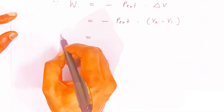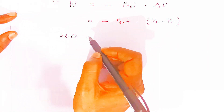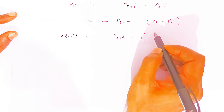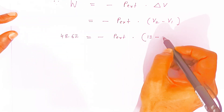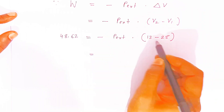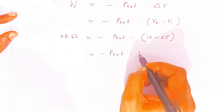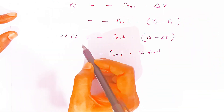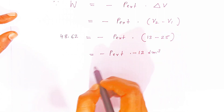Now put in the values. Work done is 48.624 dm³·bar = −P external × (V2 − V1) = −P external × (13 − 25) = −P external × (−12 dm³). Since minus into minus is plus, this becomes P external × 12 dm³.